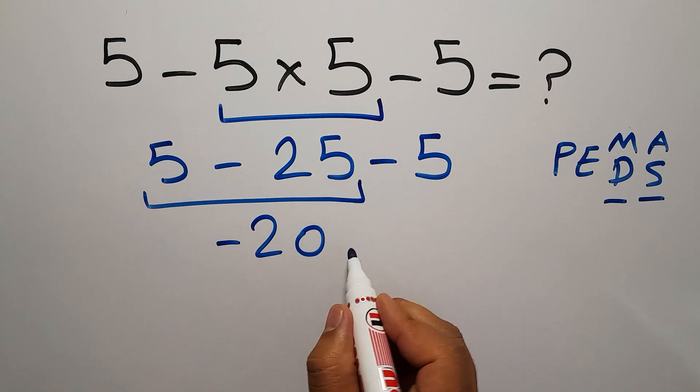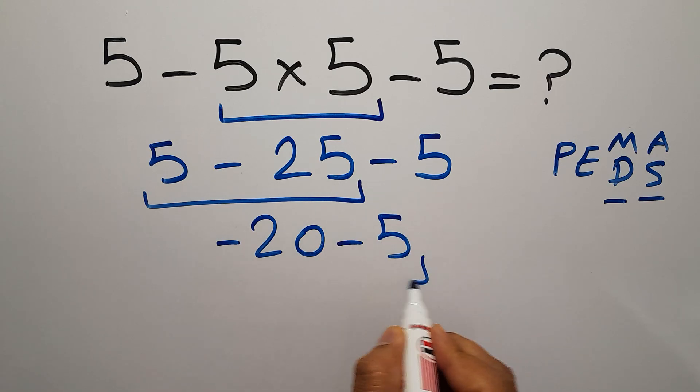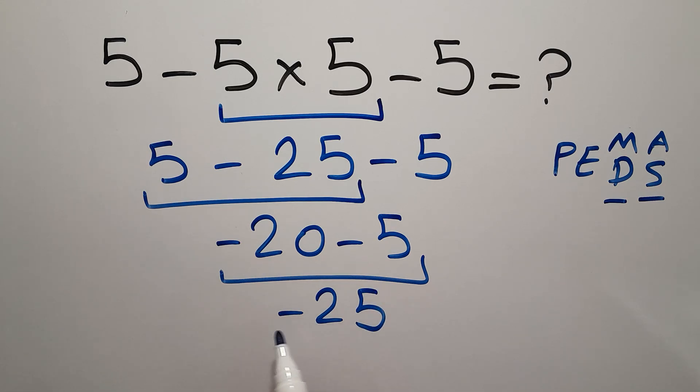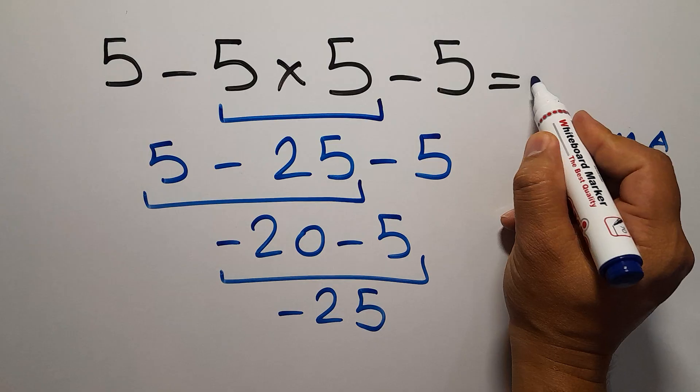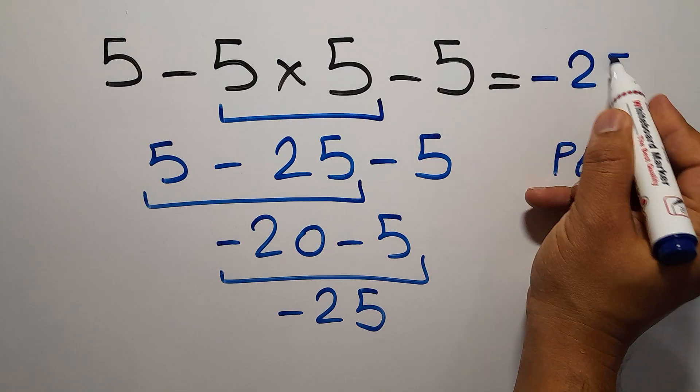So negative 20 minus 5, and this equals negative 25. Therefore, our final answer to this problem is negative 25.